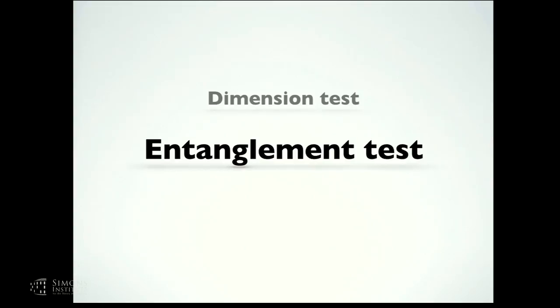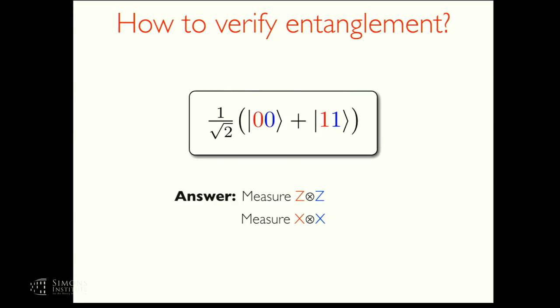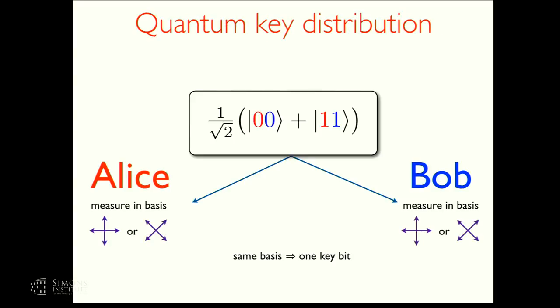So the second test I'd like to explain is one for entanglement. How do you know that you have an entangled state? For example, a cat state zero zero plus one one. The simplest answer is to apply state tomography. So you can measure each qubit in the Z basis or measure each qubit in the X basis. If you measure them both in the Z basis, you should get even parity. If you measure them both in the X basis, you should get even parity as well.